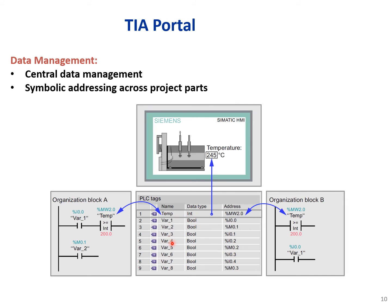Tags are the names given to input and output devices — contacts and coils, both internal and external. You can see the memory address, the data type, and the PLC program. This is one example of data management in TIA Portal. Once you start programming with TIA Portal, you will learn more about how to write the program and what these features mean.